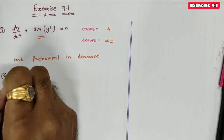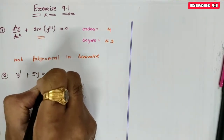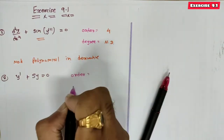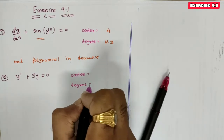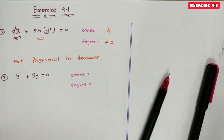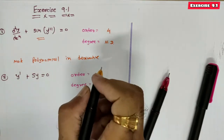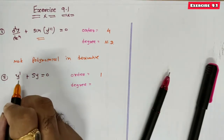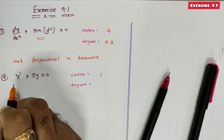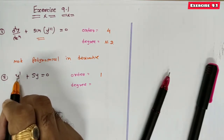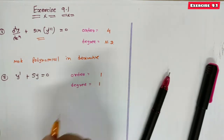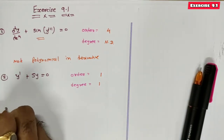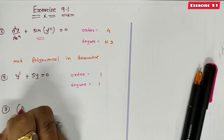Next, equation 2: y' + φ(y) = 0. The order is the highest order derivative present, which is first order, so order is 1. The equation is polynomial in derivatives, and the power of the highest order derivative is 1, so the degree of this differential equation is also 1.